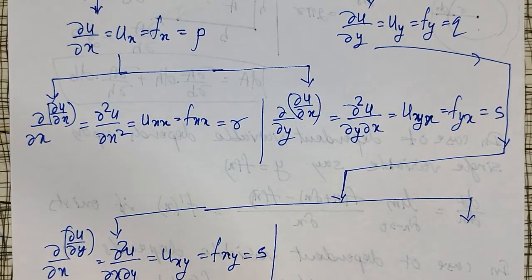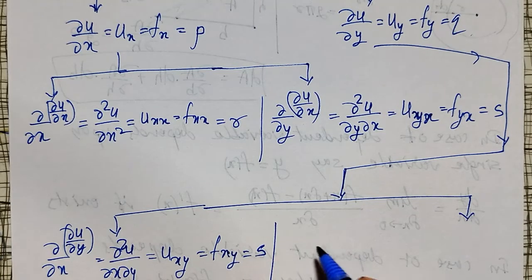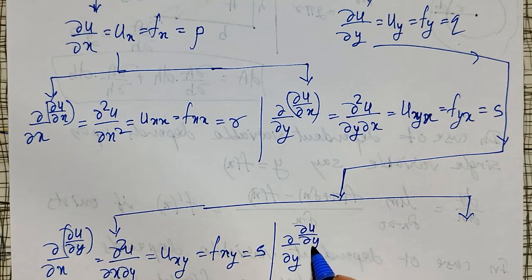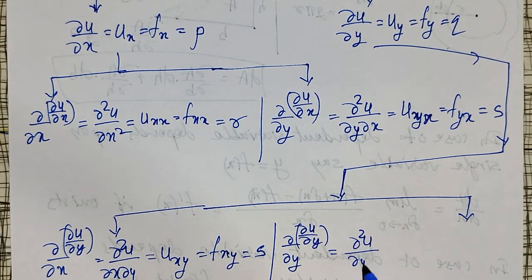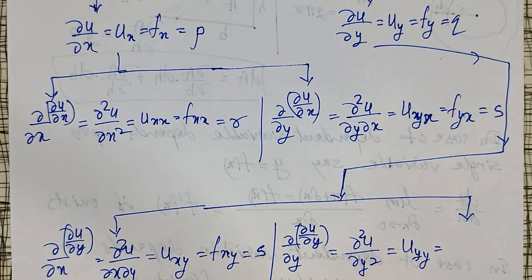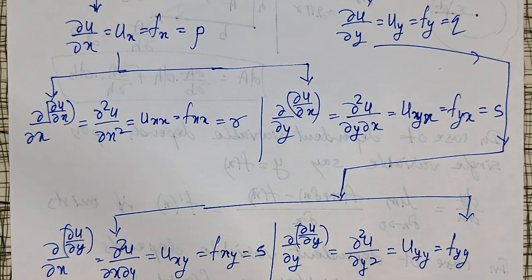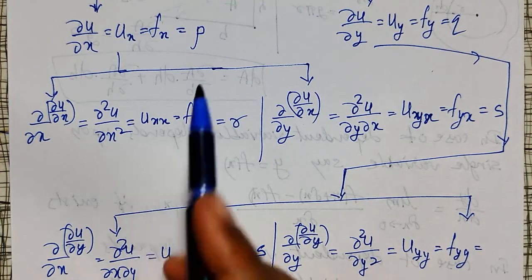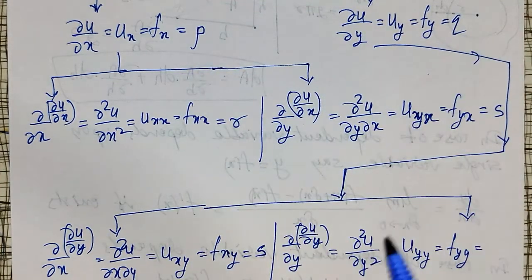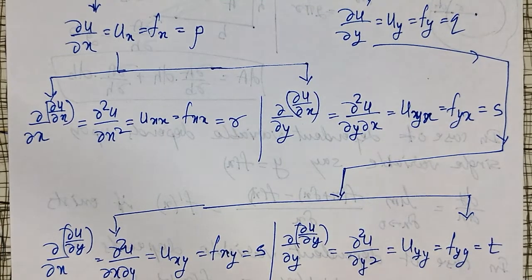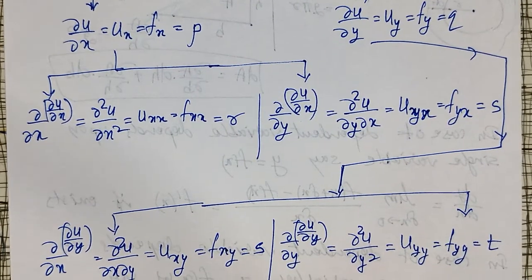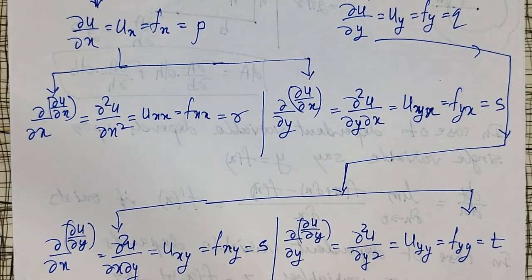Finally, ∂u/∂y can also be differentiated partially with respect to y, giving ∂/∂y of ∂u/∂y, which is written as ∂²u/∂y². The short notation is u_yy, or f_yy, and it is denoted by t. So in the notation system p, q, r, s, t — these cover all the second-order partial derivatives.